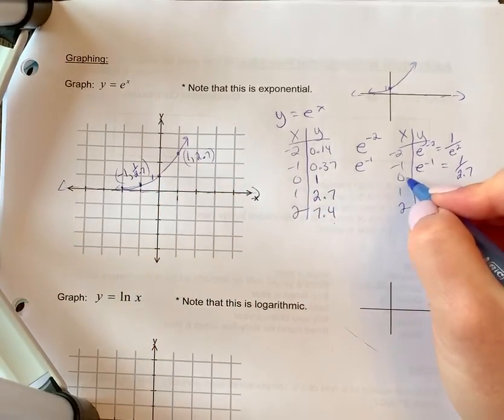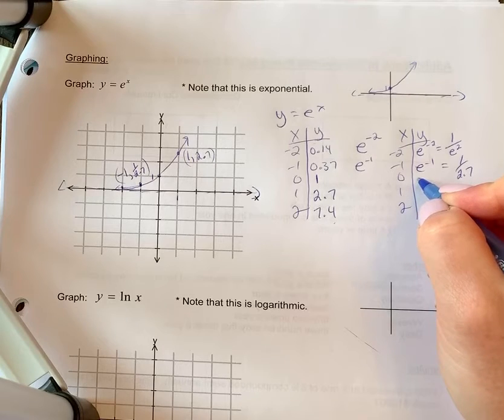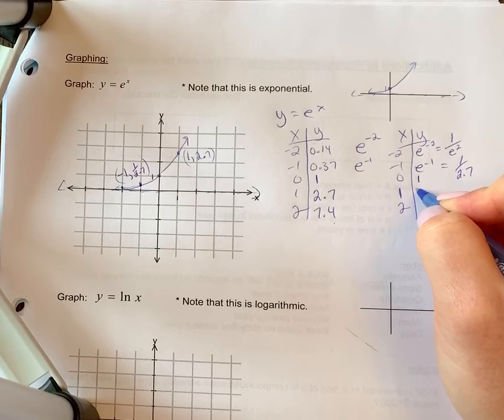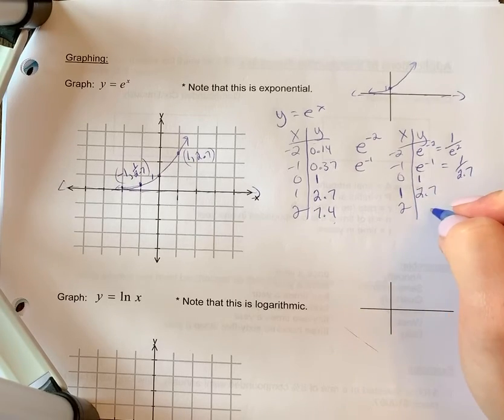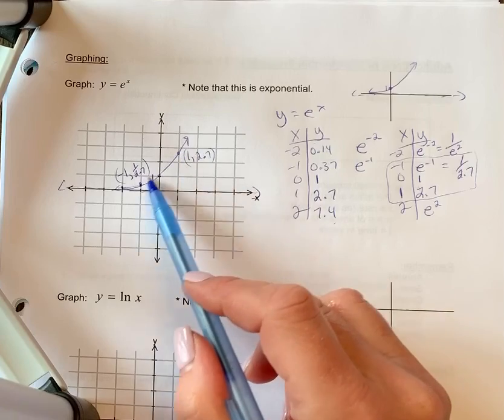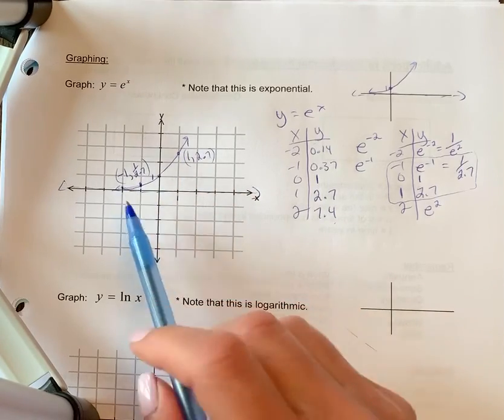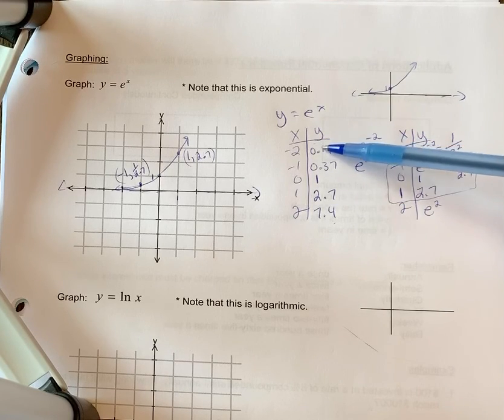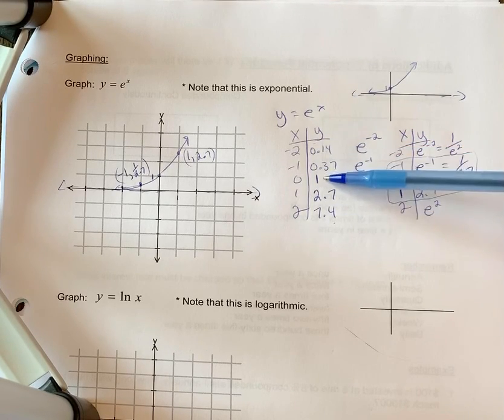That point we already talked about without a calculator is anything with exponent 0 is 1. I didn't need a calculator for this one. e to the 1 is 2.7. And this is just going to be e squared. I didn't even plot that point. So really, if you've got these three points, you've got enough of your graph and you know what approaches the asymptote. So you do not need a calculator to necessarily graph that. But I thought it was valuable to just practice what it would look like if you did have decimals.